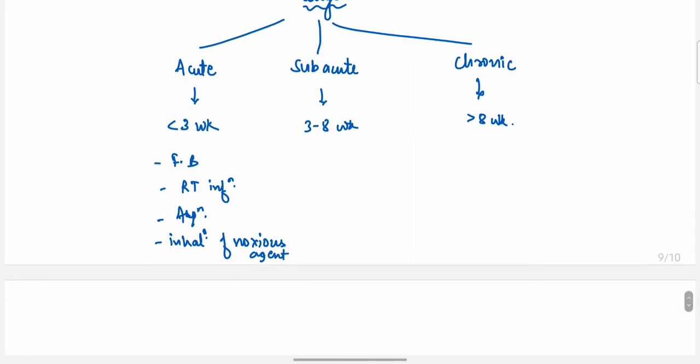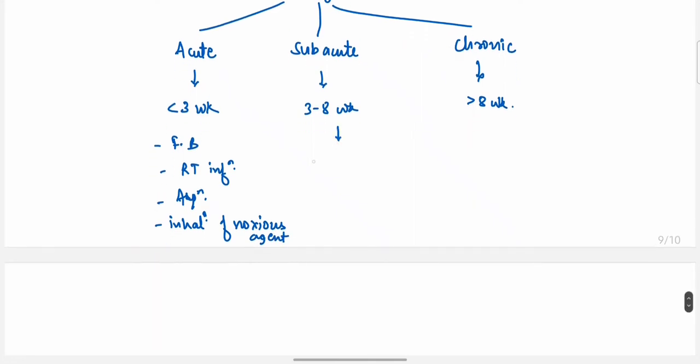Causes of subacute cough—we have to remember two main causes: tracheobronchitis and post-viral tussive syndrome. In chronic cough, main causes are TB and use of ACE inhibitors for cardiopulmonary causes.